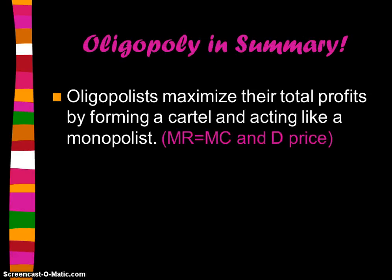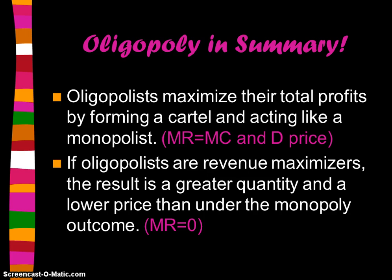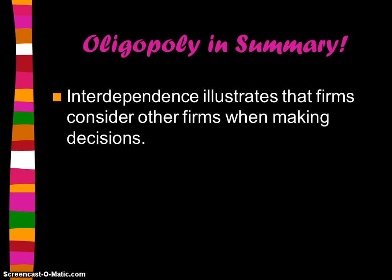In summary, oligopolists maximize their total profits by forming a cartel and acting like a monopolist — producing where MR equals MC and then referencing the demand curve for the price. If oligopolists decide they're going to be revenue maximizers, they could produce a greater quantity at a lower price than under the monopoly outcome — collude and act as a monopolist and divide up the output, or try to sell as much as possible and produce where MR equals zero. Or oligopolistic firms could be interdependent and engage in game theory strategy, assuming the kinked demand curve.